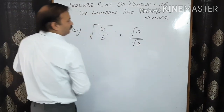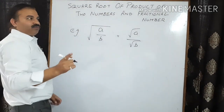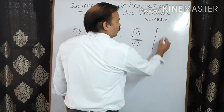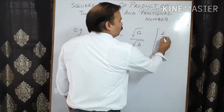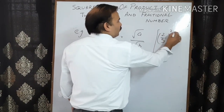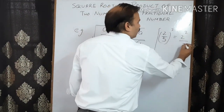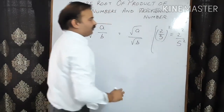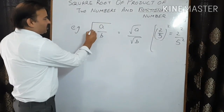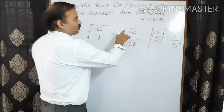As we have done with powers — for example, the quantity 2 by 5 whole raised to power 2 can be written as 2 raised to power 2 upon 5 raised to power 2 — similarly, square root of a upon b can be written as square root of a upon square root of b.